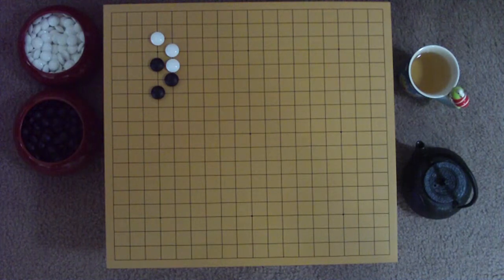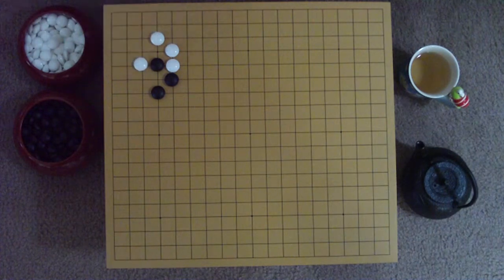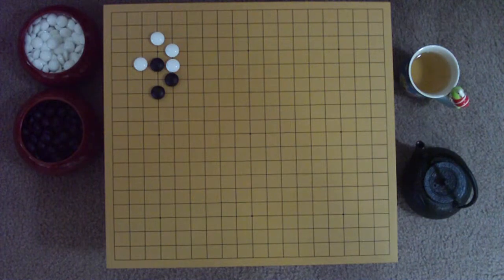For example, if White chooses to respond by squeezing Black's approach stone on the 3rd line, she manages to secure the corner fairly well. However, Black still has the initiative.